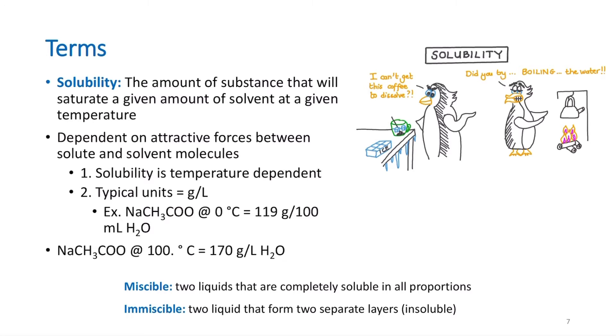Solubility is temperature dependent, and we typically represent this in units of grams per liter. So for example, by the temperature dependency, sodium acetate at 0 degrees C, I can dissolve 119 grams of sodium acetate in 100 milliliters of water. If I heated that solution up to 100 degrees C, I can actually dissolve 170 grams of sodium acetate in 100 grams of water. Some substances, truthfully most substances, are more soluble as I increase the temperature when it's a solid going into a liquid.